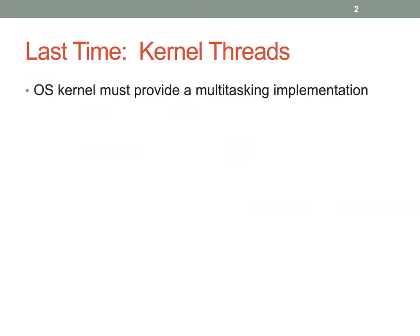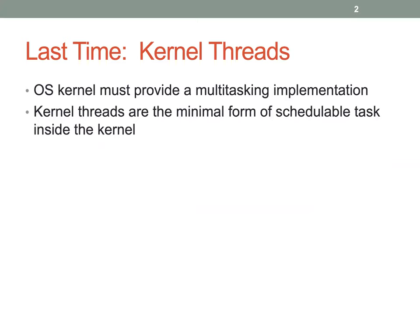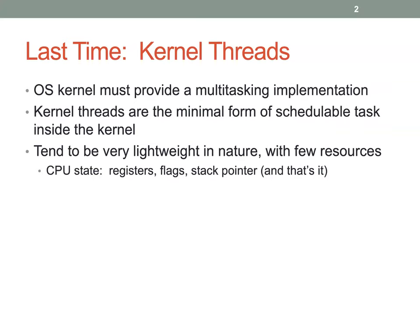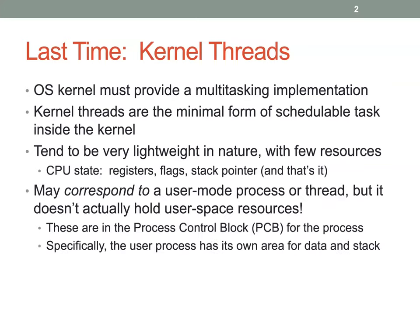Last time, we introduced the concept of kernel threads, which is the mechanism that the OS kernel uses for building multitasking. It's the thing that allows sharing the processor across multiple logical control flows within the kernel. The kernel thread is the thing that the OS kernel schedules, and the scheduler knows how to manipulate these things and switch back and forth between them. Kernel threads are very lightweight — they tend to have register state, a flag, a stack pointer, and a small stack space, because we want to spend as little time in the kernel as possible.